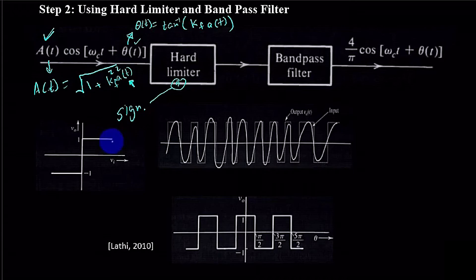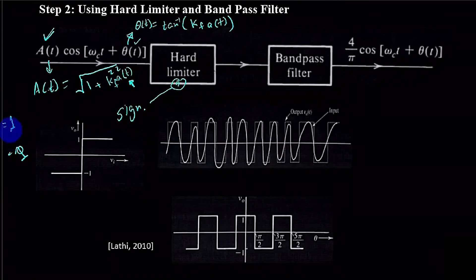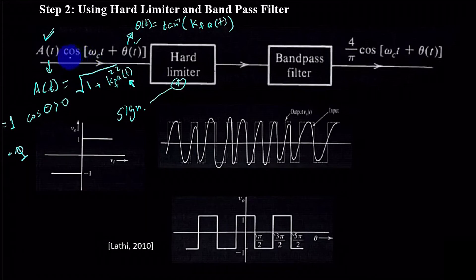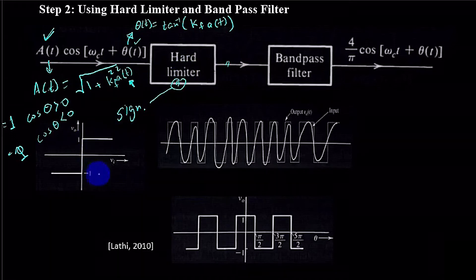By signum function what we mean is that the output would be equal to +1 or −1. It would be equal to +1 when cos(θ) > 0, meaning if the cosine function is positive we get +1, and if the cosine function is negative we get −1, i.e., cos(θ) < 0. So the output V_out is based on either +1 or −1.